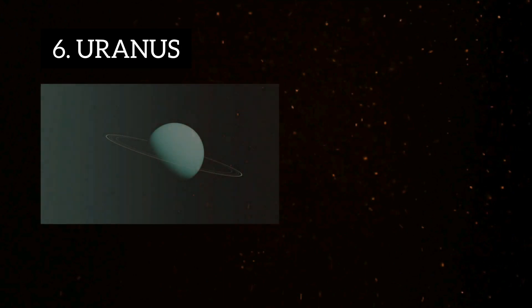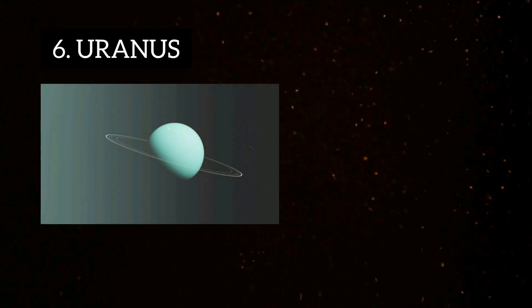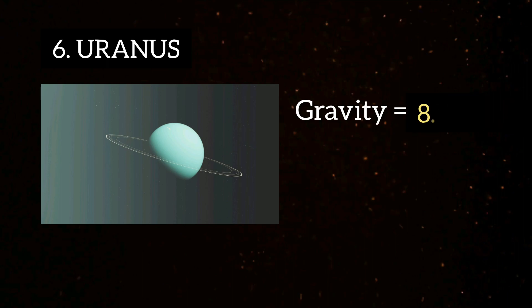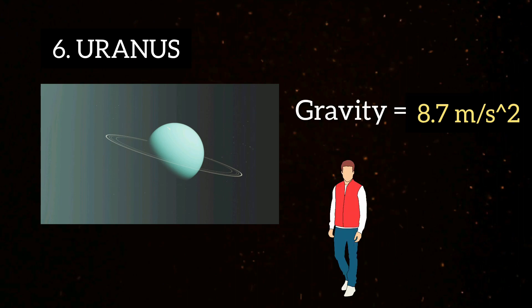Sixth, Uranus, the coldest planet of our solar system, has a gravity of around 8.7 meters per second square, which is 0.88 times the Earth. So, the person's weight will be 88 kg on Uranus.